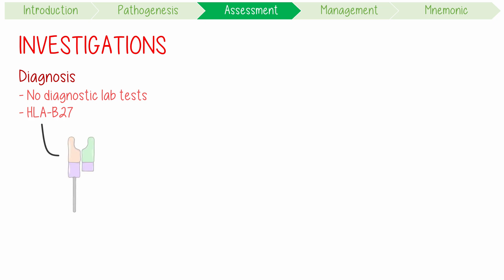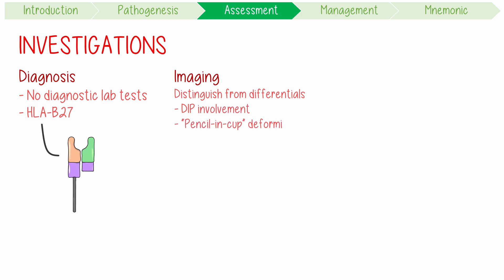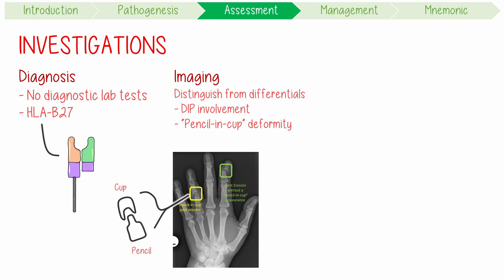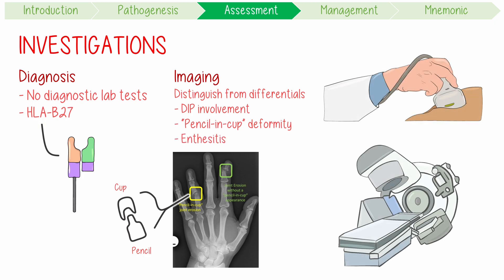Investigations and diagnosis of psoriatic arthritis is hard because there's no diagnostic lab test for it. HLA-B27 is found in 70% of patients with axial disease, but less than 20% with only peripheral disease. Imaging can help distinguish peripheral disease from rheumatoid arthritis. Psoriatic arthritis characteristically has DIP involvement, including the classic pencil-in-a-cup deformity. Additionally, enthesitis can be demonstrated on ultrasound and MRI.